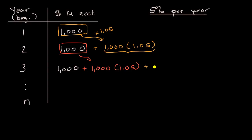And so this is going to be plus $1,000 times 1.05 times 1.05. We're growing by another 5%. Well, we could just rewrite this part right over here as 1.05 squared.